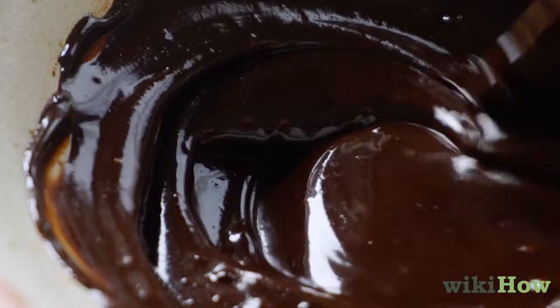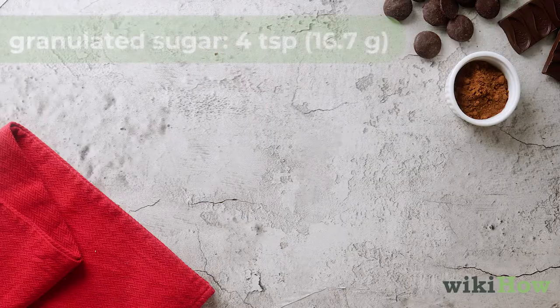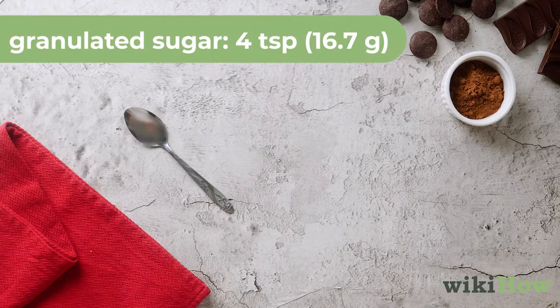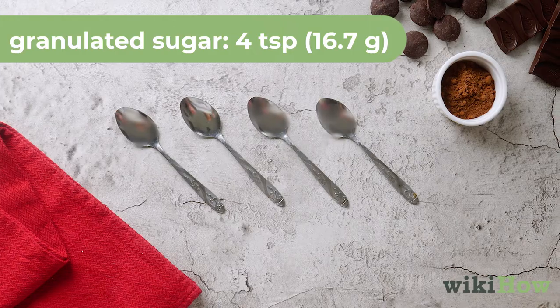If you need sweet baking chocolate, use 4 teaspoons (16.7 grams) of sugar.